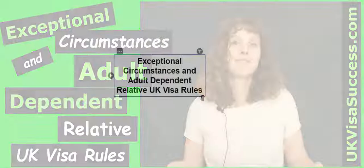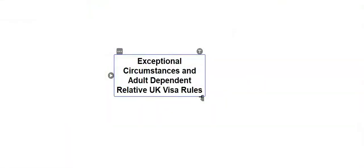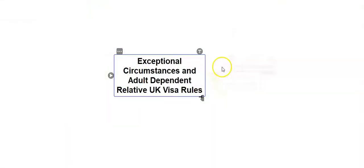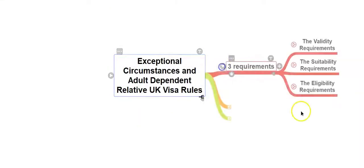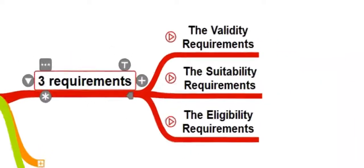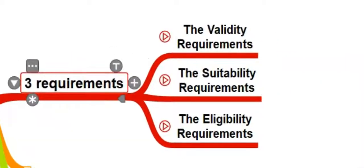Your adult dependent relative UK visa will be granted if you meet only three requirements: the validity requirements, the suitability requirements, and the eligibility requirements.